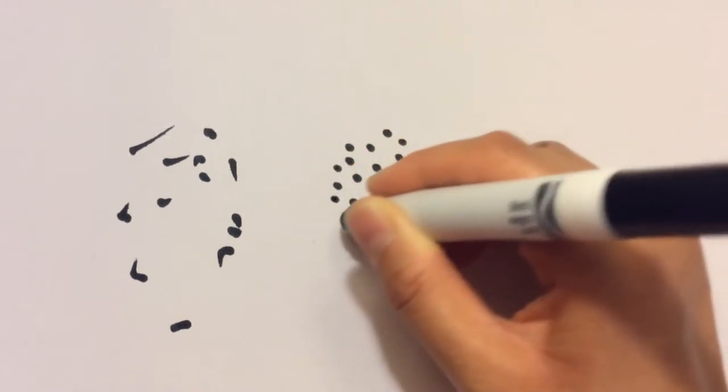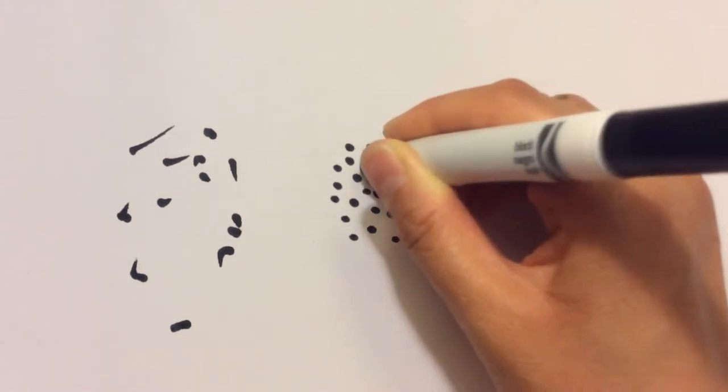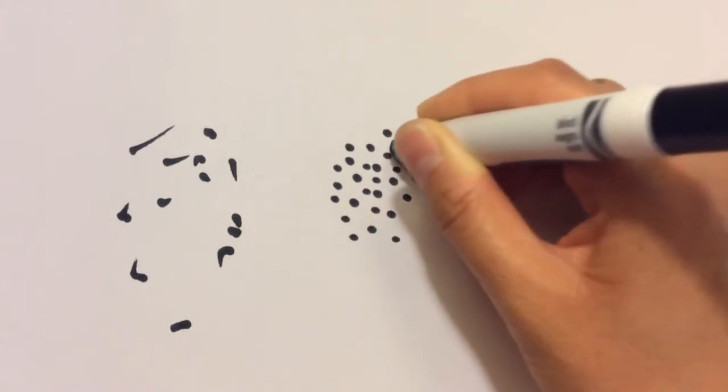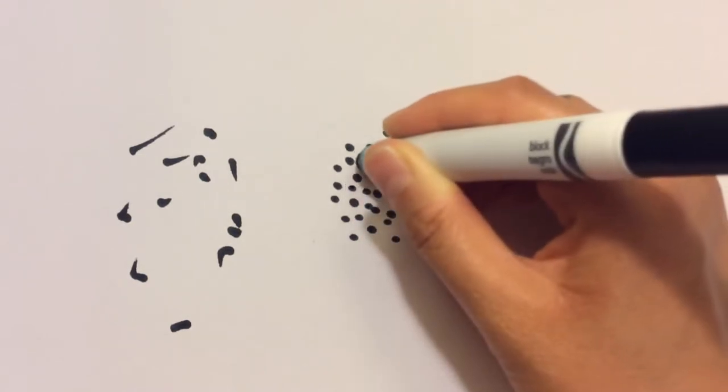If you want your color to look darker, you can always go back to the white spaces between the dots and add more dots. The more dots you have, the darker it's going to look.